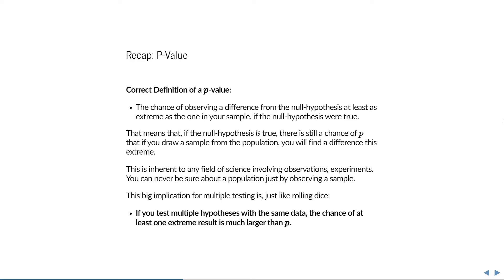Next, let's recap the meaning of the p-value, because it has a very strange meaning that is very important to get right. Namely, the p-value is the chance of observing a difference from the null hypothesis, at least as extreme as the one in your sample, if the null hypothesis were in fact true. So that means that if the null hypothesis is true and there is no difference in the population, there is still a chance of p that if you draw a sample from the population, you will find a difference as extreme as the one in your sample.